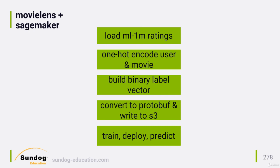Once our training and test data are in the expected format and in the expected place, the rest is relatively simple. We tell SageMaker to spin up some hardware to train our factorization machine model, deploy the trained model into production, and then we can query it for specific predictions for given user-movie combinations. Let's have a look at the code.